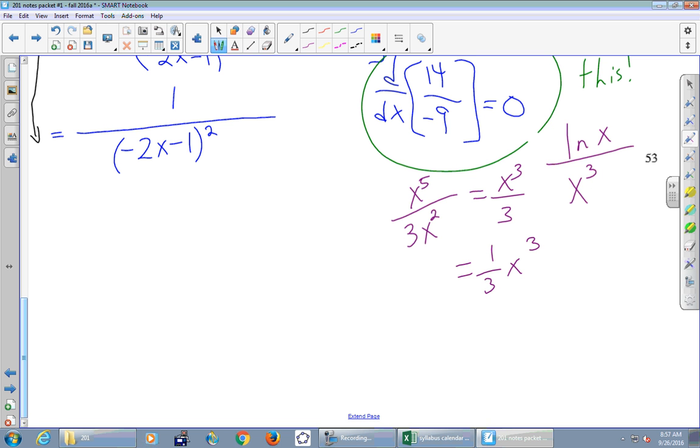And even something like this, 5 over 2x to the 4. You could use the quotient rule, but much easier would be to first write this as 5 halves x to the what power? Negative 4. And then it's a power rule. You'll get the right answer at the end of the day. But the power rule is a whole lot simpler than the quotient rule. So it's really, if you have x's on top and bottom and you can't simplify, clean up at all, can't smush them together, then, yeah, it's a quotient rule. But if you can make it look like a power rule, then do so.